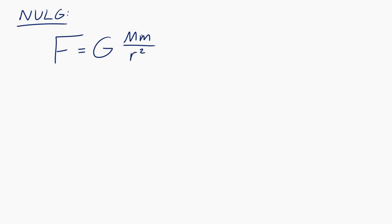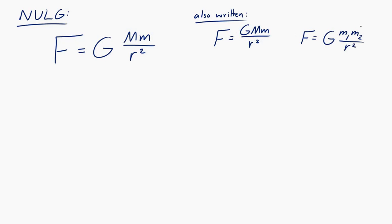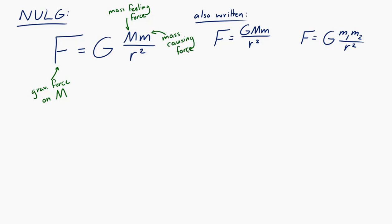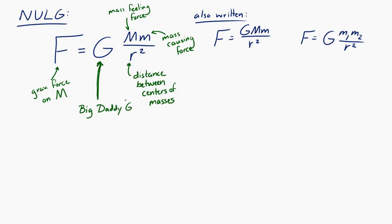Newton's universal law of gravitation is written as F = GMm / r². In this equation, F is the gravitational force; m is the mass that feels the force; capital M is the mass causing the force; and r is the distance between the centers of the two masses. Capital G — my first physics teacher called it Big Daddy G — is the gravitational constant of the universe, equal to 6.67 × 10⁻¹¹ N·m²/kg². That's a weird unit, but it's a constant that makes this equation work.